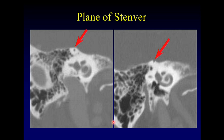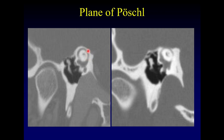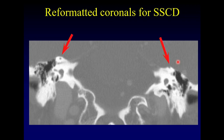In the plane of Stenver, this is a normal superior semicircular canal with a nice bony covering on top, and this one shows dehiscence — no bony covering on top of the canal. In the plane of Paschel, same idea: here is a nice bony covering, and here there is a gap over the top of the canal. But here's a secret: you don't need the planes of Stenver and Paschel. Your basic everyday coronal reformat is perfectly good for this diagnosis and performs just as well. It's fun to play with those planes, but they don't improve your diagnostic accuracy.